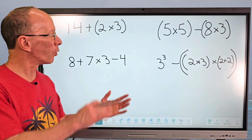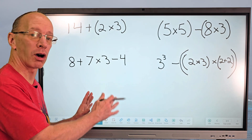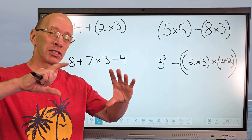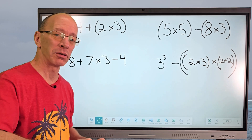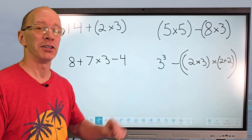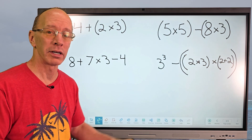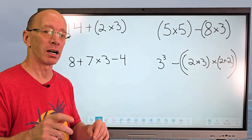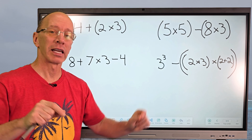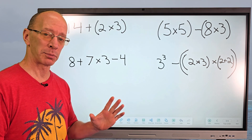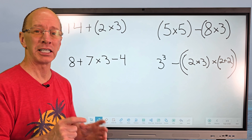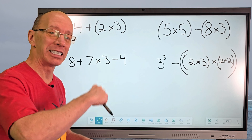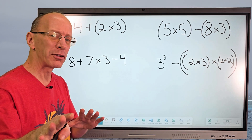Welcome to the show. Today we're using order of operations to solve problems. Order of operations is a sequence of events to solve a problem — so that whether I do it here or you do it across the world, we come up with the same answer. The sequence is: first, do what's inside parentheses; second, do exponents; third, do multiplication and division from left to right; and fourth, do addition and subtraction from left to right.